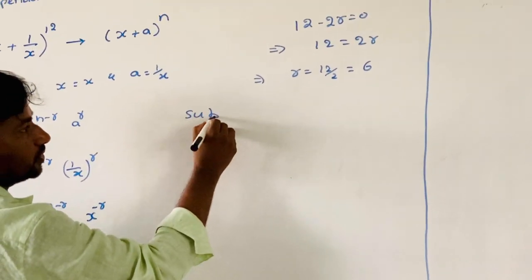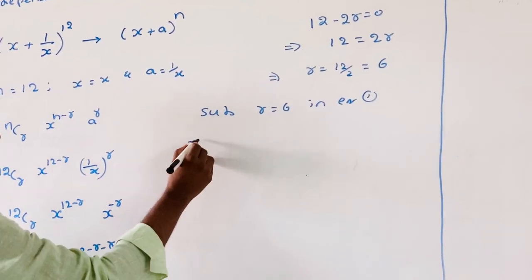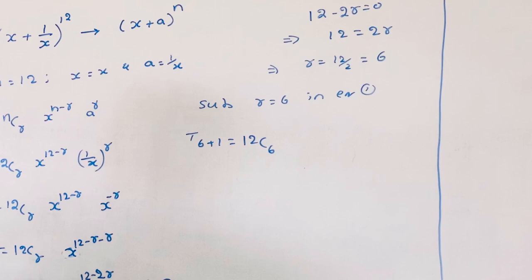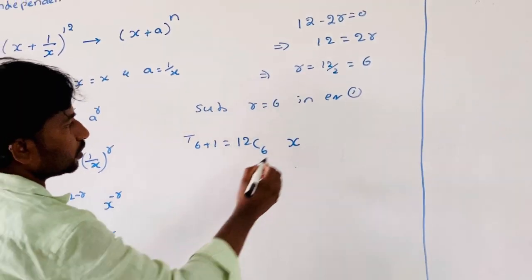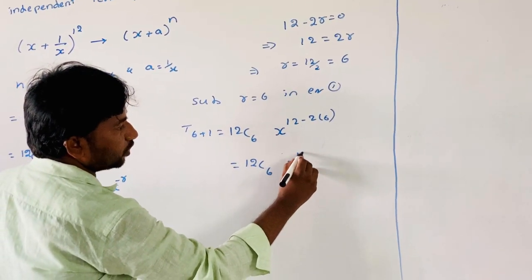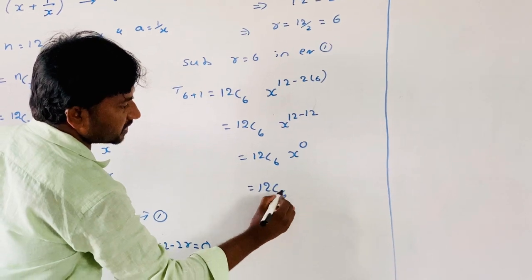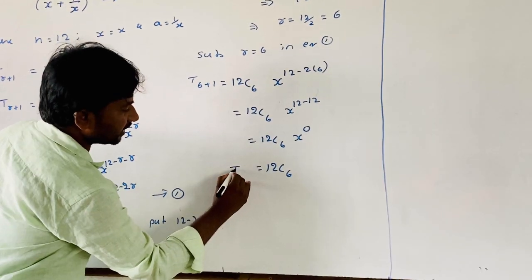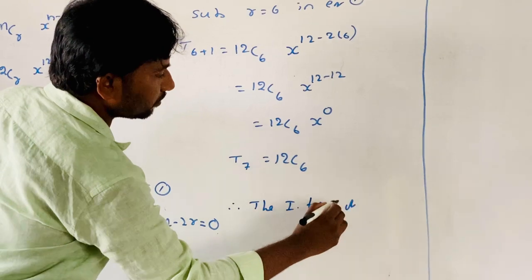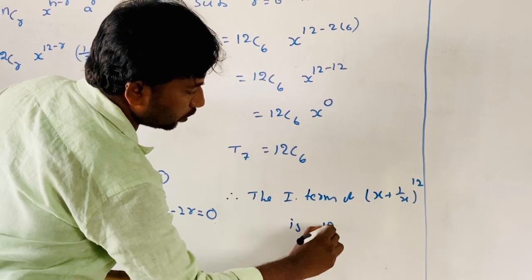Now substitute r = 6 in equation 1. T(6+1) = 21C6 · x^(21 − 2×6) = 21C6 · x^(21−21) = 21C6 · x^0 = 21C6, since any power 0 equals 1. That is T7. Therefore, the independent term of (x + 1/x)^12 is 12C6.